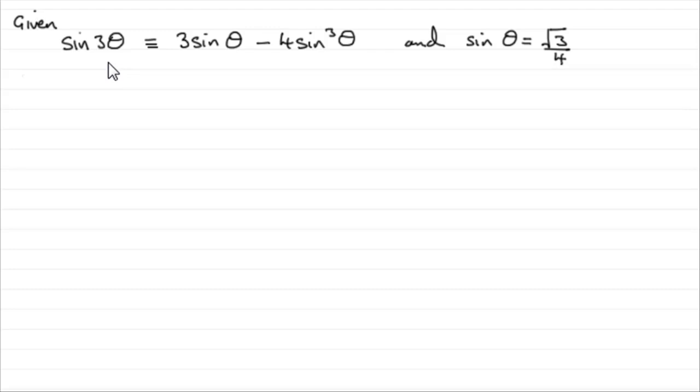So how are we going to do that? Well it's going to be fairly straightforward because all we need to do is just substitute root 3 over 4 in wherever we see sin θ and just work out that exact value for sin 3θ. So let's just do that.